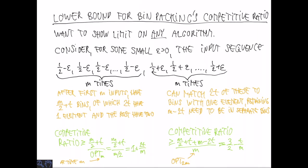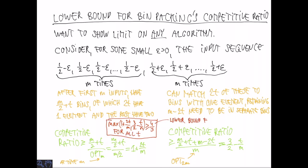We now have two lower bounds on the competitive ratio: one increasing in T and one decreasing in T. No matter what T is, one of these is always at least 4/3. So 4/3 is a lower bound for any online algorithm for bin packing.